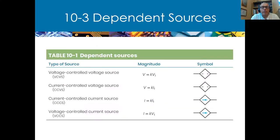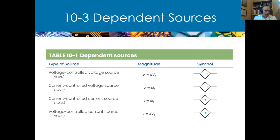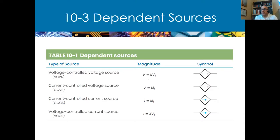There are four types of dependent sources. There's a voltage-controlled voltage source, where the output voltage is a constant times whatever the external voltage is. There's a current-controlled voltage source, where the voltage is a constant times a current from somewhere else in the circuit. There's a current-controlled current source, which is a current source affected by the current level of another part of the circuit. And there's a voltage-controlled current source, where a current source depends on a voltage level somewhere else in the circuit.